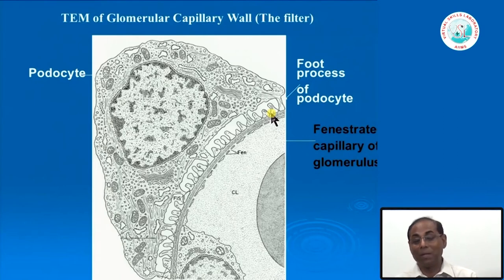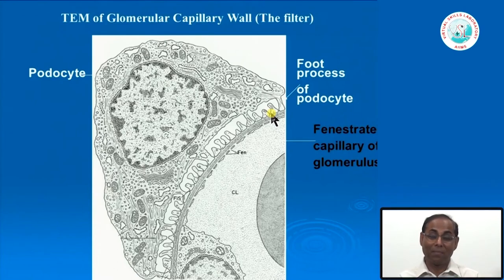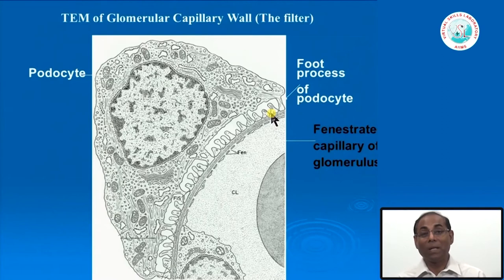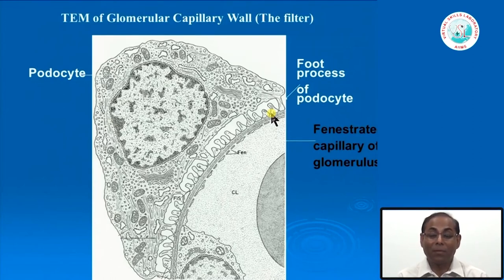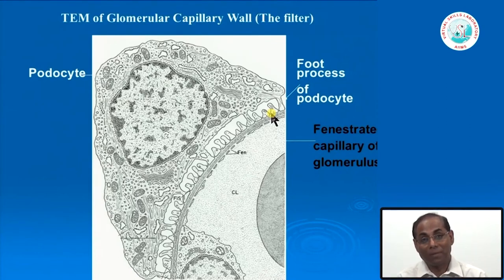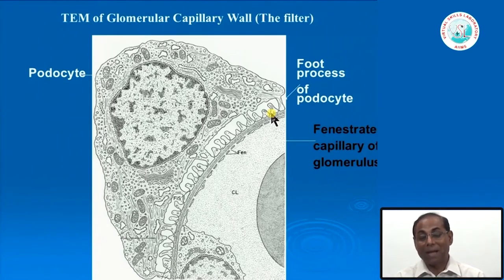If there is any damage to the podocytes, the slit pore membrane will become abnormal and lose its integrity. The larger molecules that are normally restricted by this filtration barrier will then pass into the urine. One of the most important such components is albumin, at 68 kilodaltons. If albumin starts appearing in the urine, that indicates any abnormality in the glomerular filtration barrier—most likely damage to the podocytes.